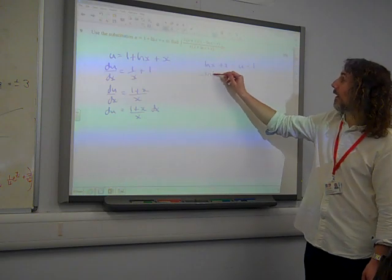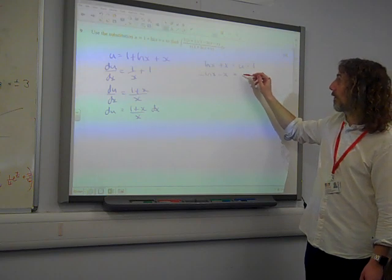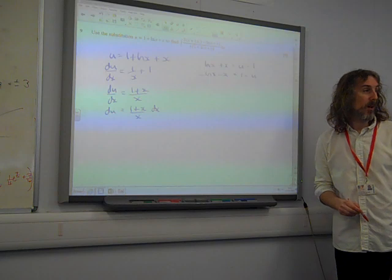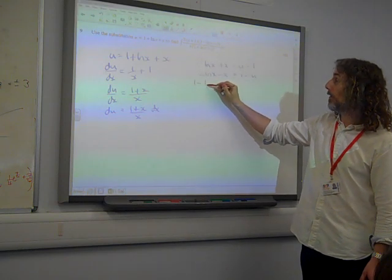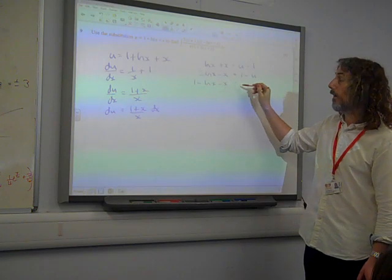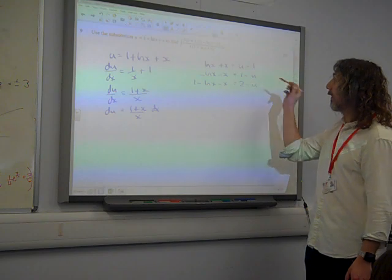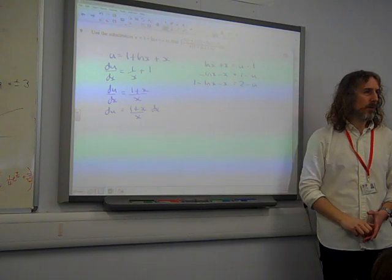So minus ln(x) minus x is the negative of that, so that's 1 minus u. So that bracket that we'd have to deal with up there, which is 1 minus ln(x) minus x, I've just added 1 to the left. If I add 1 to the right, it makes it 2 minus u. I think I'm ready to do a substitution in here.